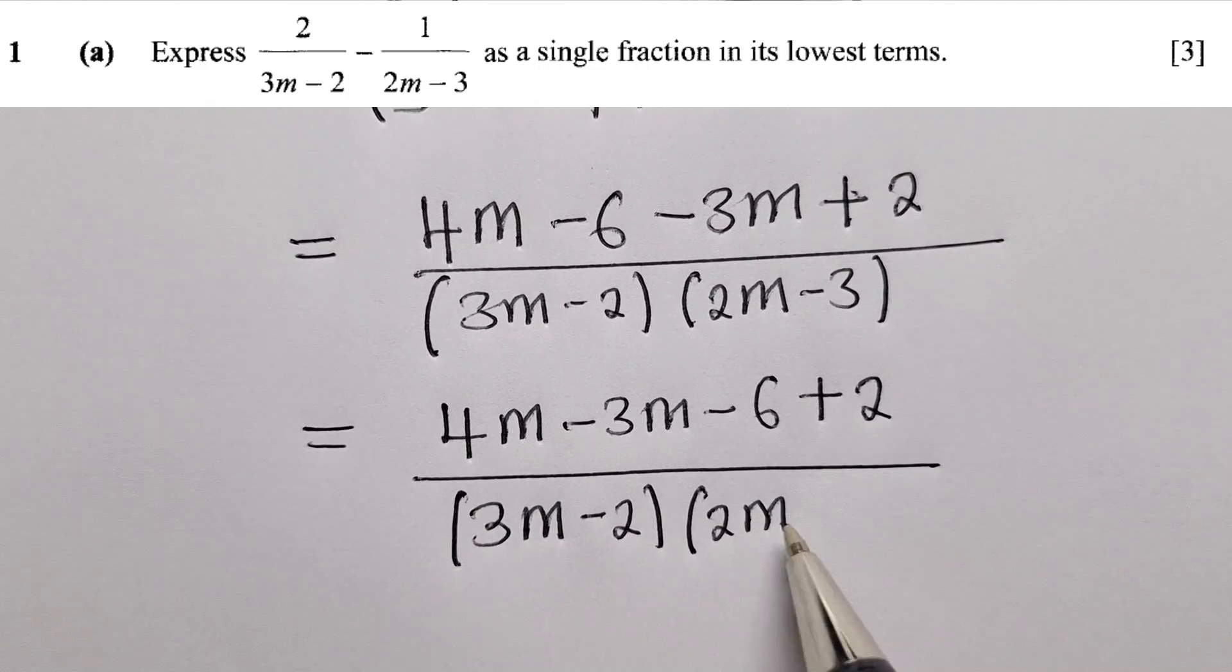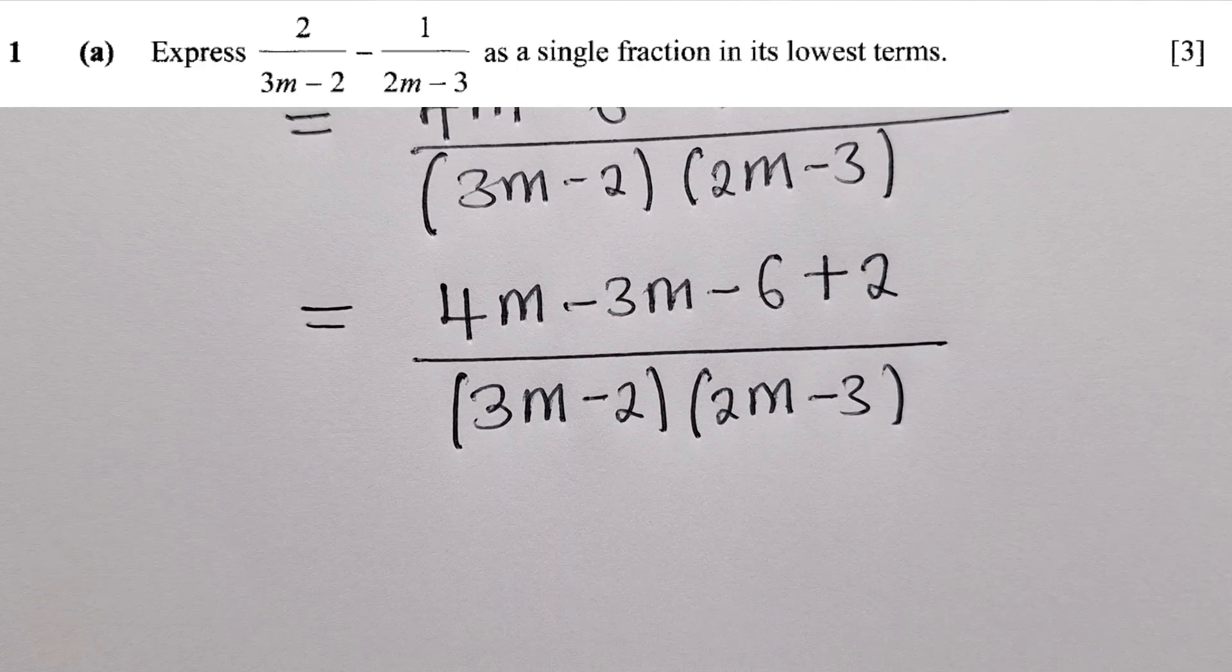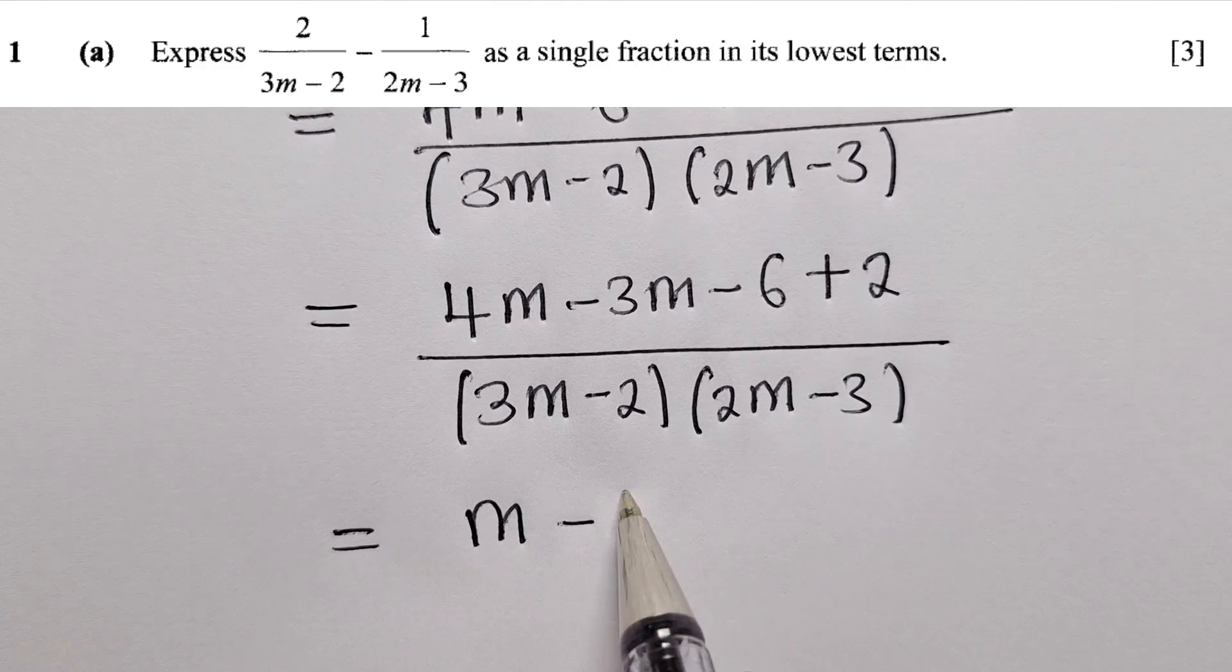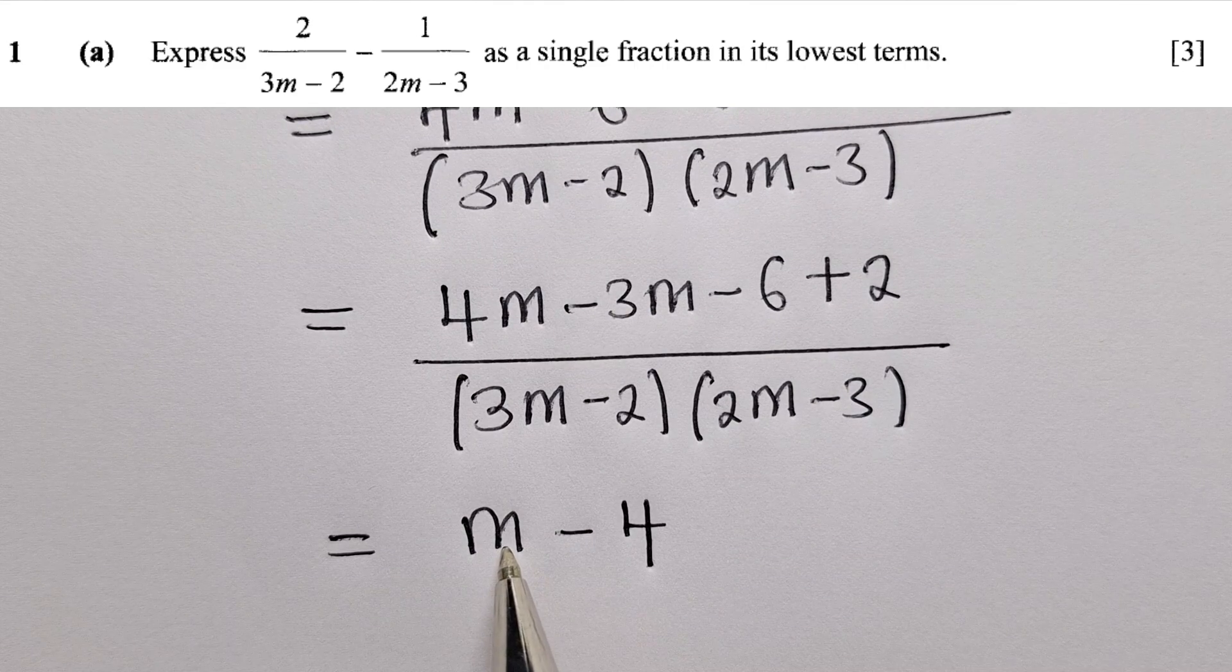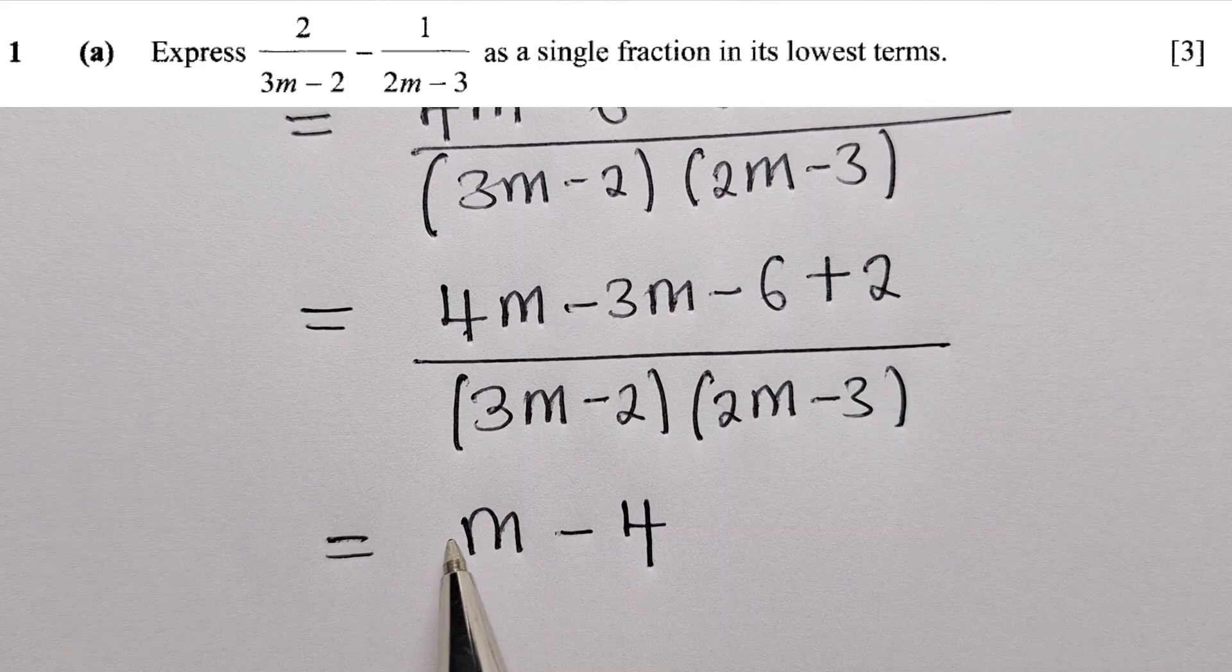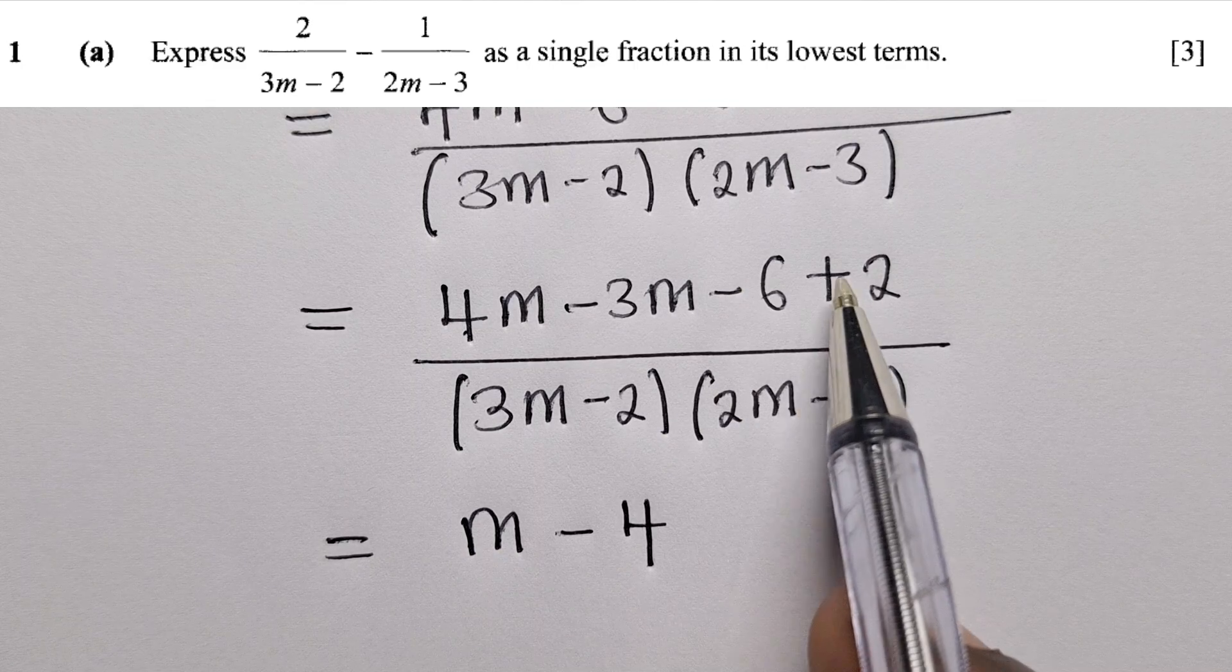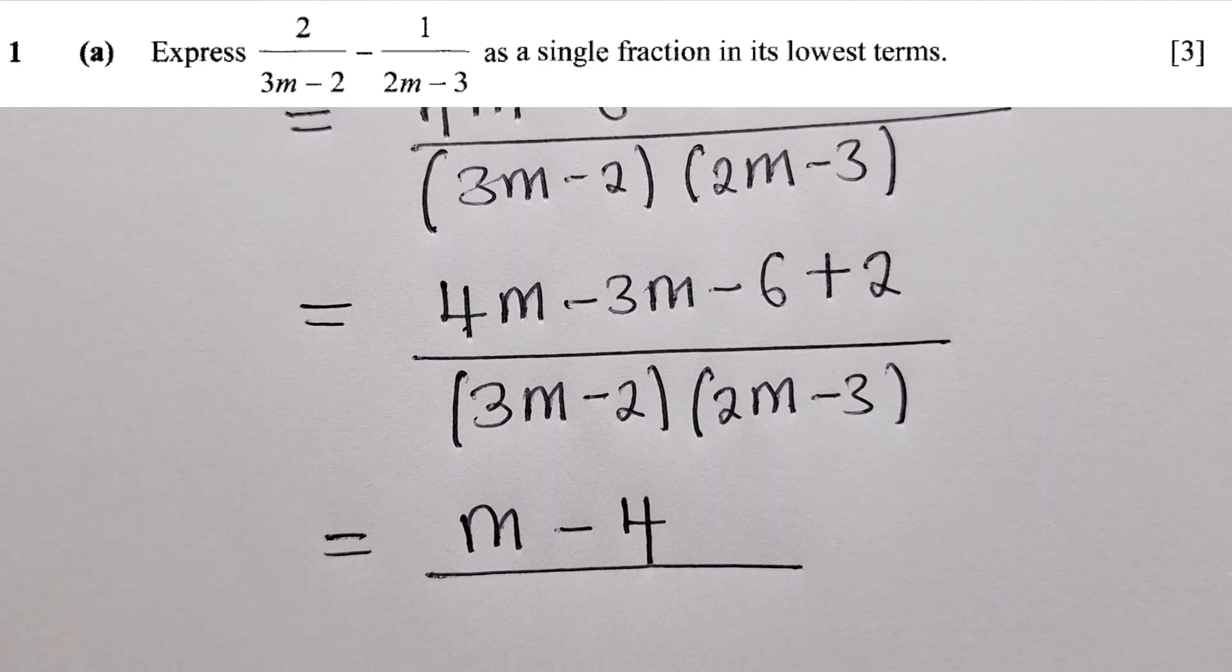We maintain the same denominator. Lastly, we clean up our work. We've got m minus 4, because 4m minus 3m is m, and negative 6 plus 2 is negative 4.